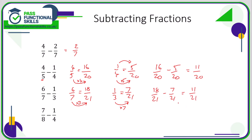In the final example, which is a bit easier, we can convert quarters into eighths and leave the eighths alone. One quarter is the same as two eighths, so the question is simply seven eighths take away two eighths, which is five eighths. Nice and easy, because one fraction can simply be converted into a fraction with the same bottom number as the other.